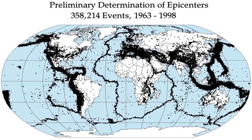Ground rupture is a visible breaking and displacement of the earth's surface along the trace of the fault, which may be of the order of several meters in the case of major earthquakes. Ground rupture is a major risk for large engineering structures such as dams, bridges, and nuclear power stations, and requires careful mapping of existing faults to identify any which are likely to break the ground surface within the life of the structure.